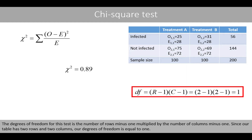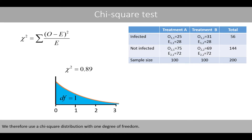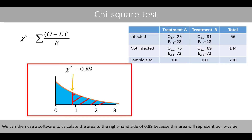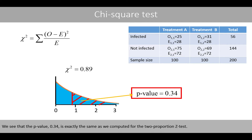The degrees of freedom for this test is the number of rows minus one multiplied by the number of columns minus one. Since our table has two rows and two columns, the degrees of freedom is equal to one. We use a chi-square distribution with one degree of freedom and calculate the area to the right-hand side of 0.89 to get the p-value. The p-value is 0.34, exactly the same as computed for the two-proportion z-test.